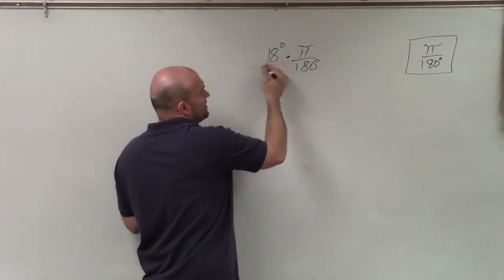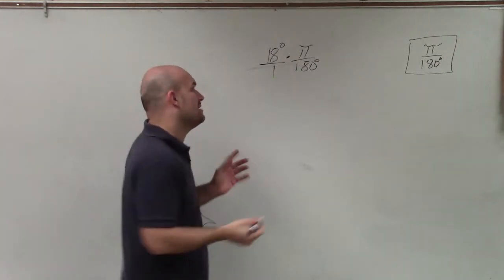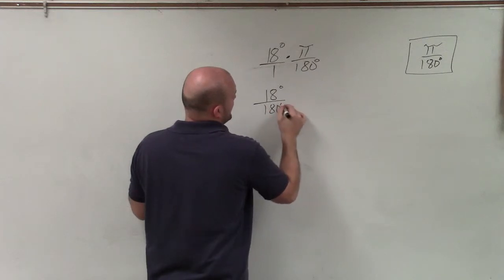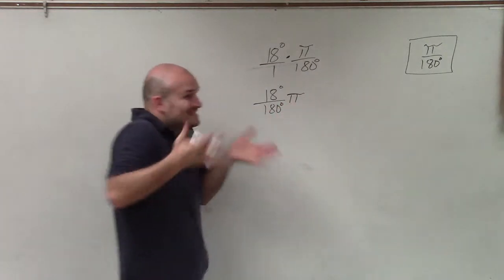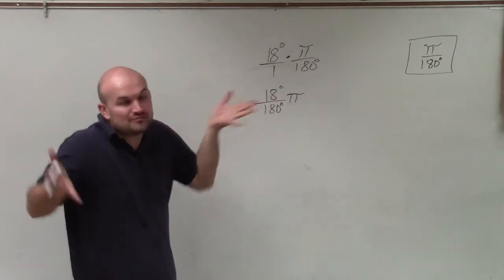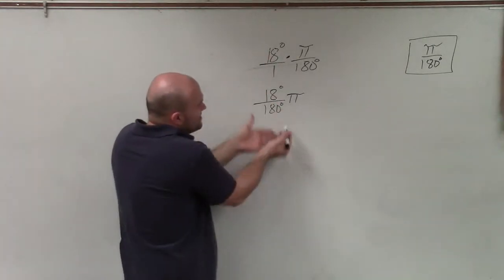And then when multiplying this, you can think of this as a fraction, but I'm going to want to simplify these. So I'm going to write 18 degrees over 180 degrees times pi. This is the exact same representation, or exact same problem. I just rewrote it in a different form because I want to simplify these.